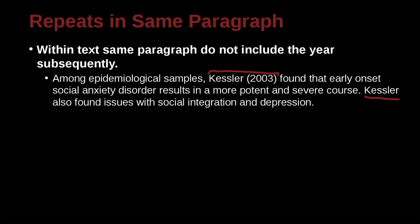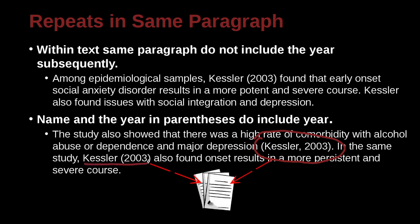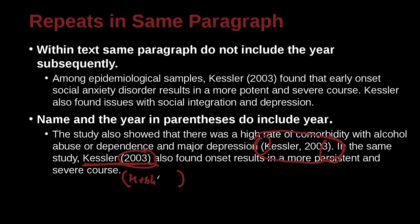This is inside the same paragraph. If the repeat is in the same paragraph, but the first occurrence was inside the parentheses, then you do need to include the date. Here we have the first time we use the Kessler citation: 'The study also showed that there was a high rate of comorbidity with alcohol abuse or dependence and major depression (Kessler, 2003).' In the same study, here I'm going to cite Kessler again — the same paper. But because the first time was inside the parentheses — the whole name — now that I'm using the name here outside the parentheses, I must include the date. Even if I included the name inside the parentheses, I would still need the date of 2003, because that first time was inside the parentheses.